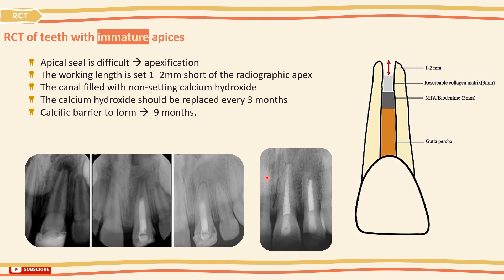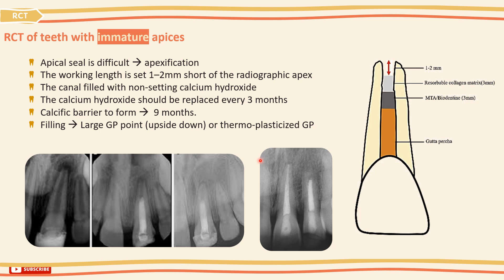Because of the canal width, a large gutta-percha point should be used, or a conventional point placed upside down can work. This should be warmed in a flame before pressing into place, and then lots of laterally condensed points are used to obtain a good seal. Alternatively, thermoplasticized gutta-percha can be another option. Note that some advocate mineral trioxide aggregate as an alternative to calcium hydroxide, allowing obturation to be achieved more quickly and over fewer visits.